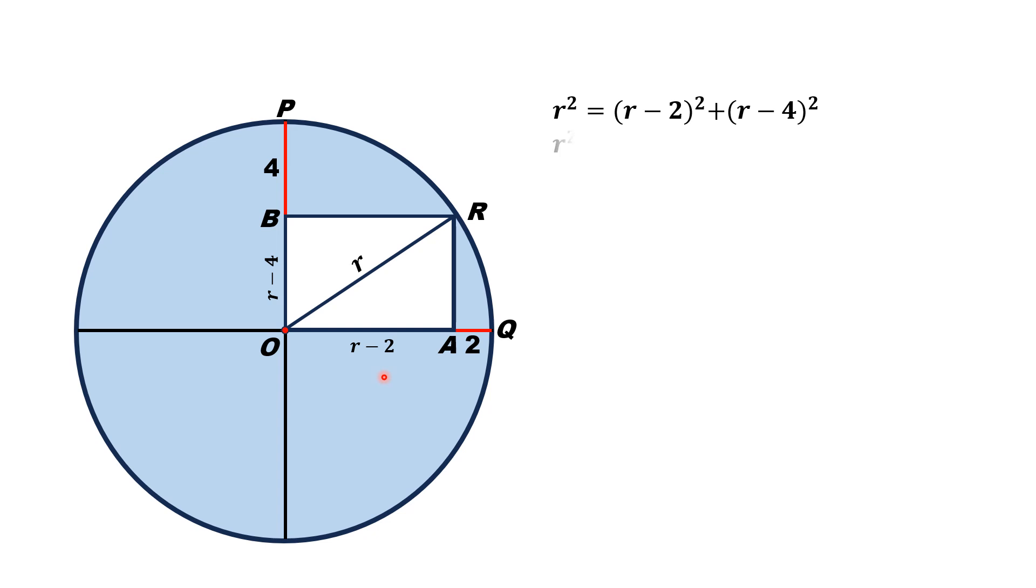Expanding the binomials on the right-hand side, we will get r² = r² - 4r + 4 + r² - 8r + 16. Simplifying this equation, we will get r² - 12r + 20 = 0.